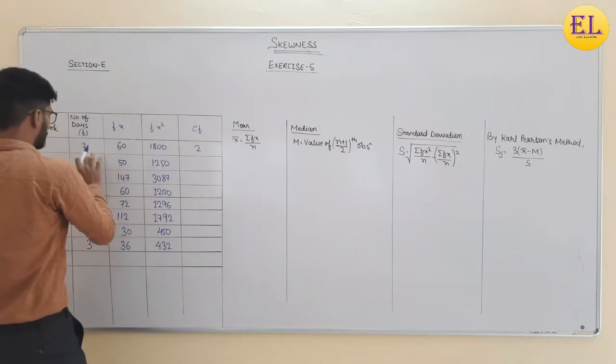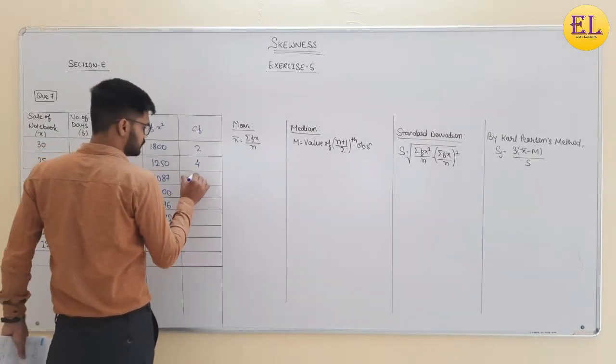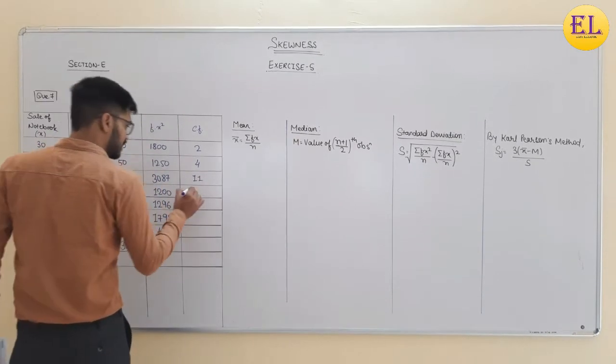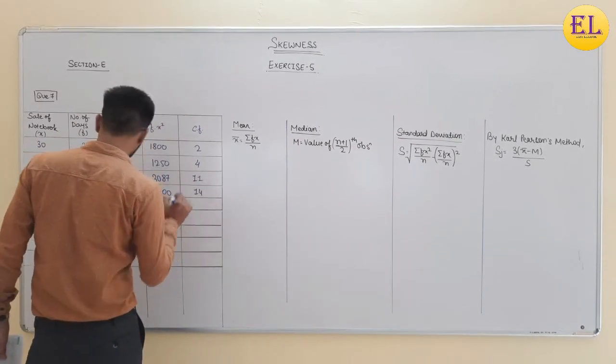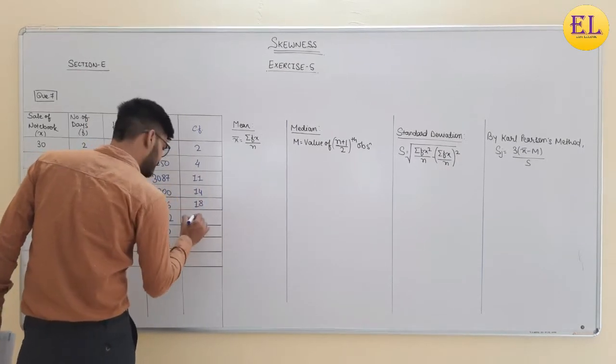The cumulative frequency values are 2, then 2 plus 2 is 4, 4 plus 7 is 11, 11 plus 3 is 14, 14 plus 4 is 18, 18 plus 7...